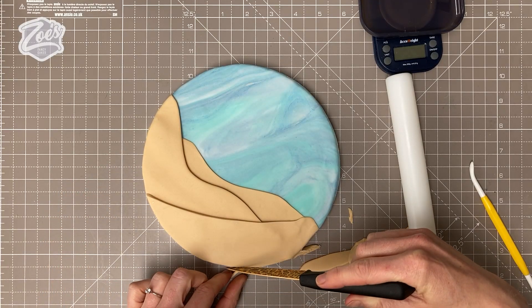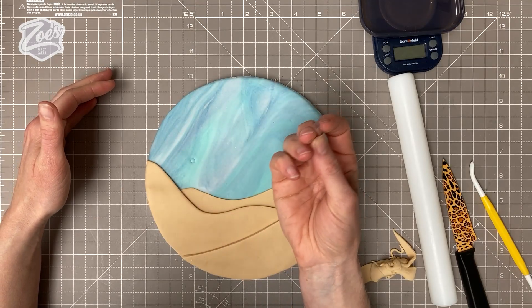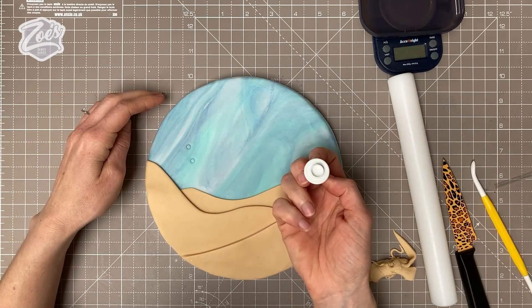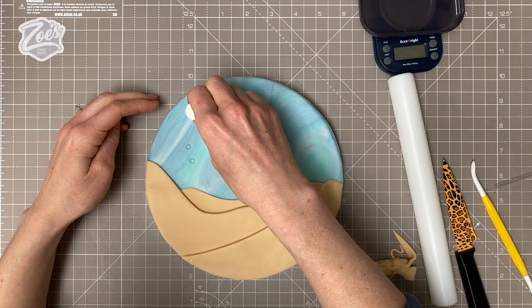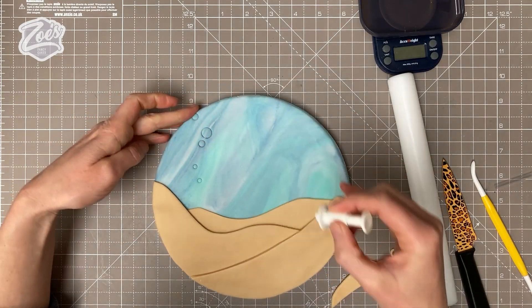I'm going to put some little bubbles in so you can tell it's sea and not sky. I'm using some round shaped cutters to press circle indentations in there. You can try to do them in different sizes.